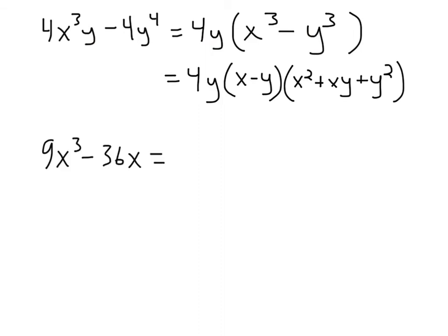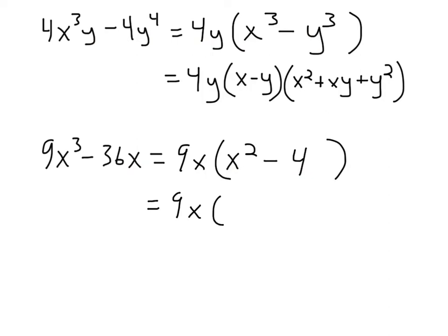For 9x³ minus 36x, the GCF is 9x, giving 9x(x² - 4). Inside the parentheses we have two terms separated by a minus sign. It's a difference of squares: x² is x times x, and 4 is 2 times 2. So it factors into 9x(x + 2)(x - 2).